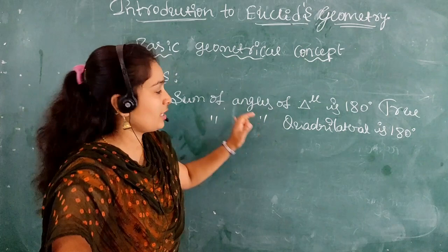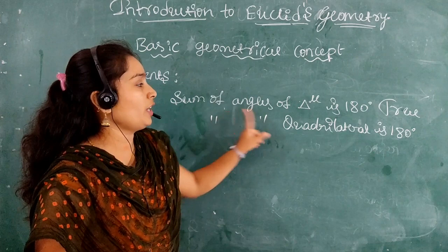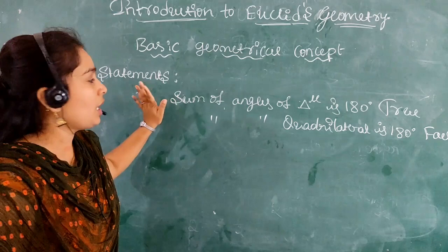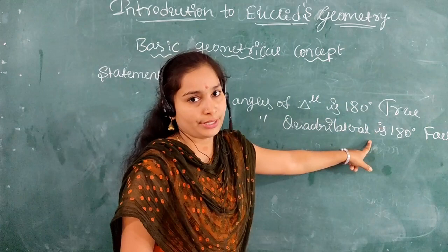The correct answer is that the sum of angles of a quadrilateral is 360 degrees, so the previous statement was false. Any sentence is a statement if it is either true or false.